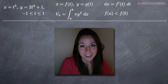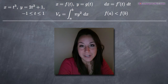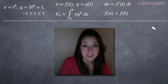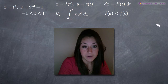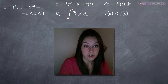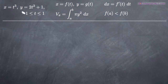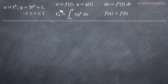Hi everyone, welcome back to integralpalc.com. Today we're going to be talking about how to find the volume obtained when you revolve the parametric curve around the x-axis. We have the parametric curve defined by x equals t cubed and y equals 2t squared plus 1, and we've been asked to find the volume of revolution when you revolve that curve around the x-axis between t equals negative 1 and t equals positive 1.